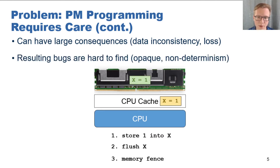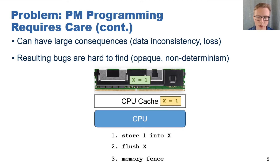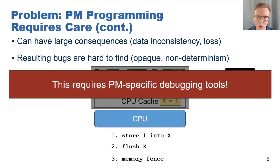These bugs can also be difficult to find due to non-deterministic factors. For example, if the flush and the fence are both missing, the update to X can still be persisted due to a cache line eviction. Furthermore, the cache state and the state of persistent memory are opaque to developers, and so traditional debugging tools like GDB cannot be used to check whether or not an update has been properly persisted or if it only resides in the volatile CPU cache. We therefore need persistent memory-specific debugging tools to help us reason about these bugs.